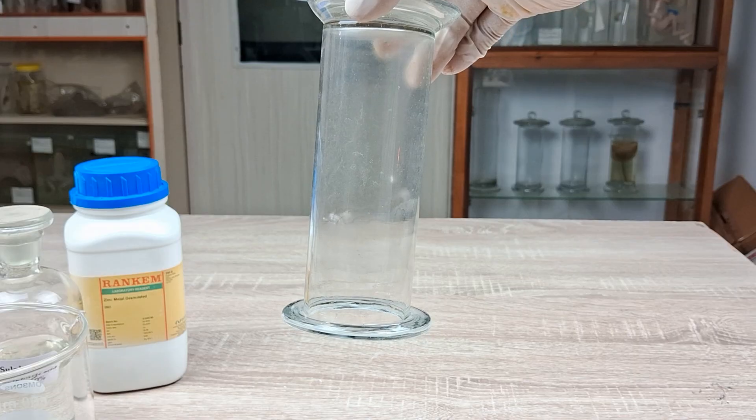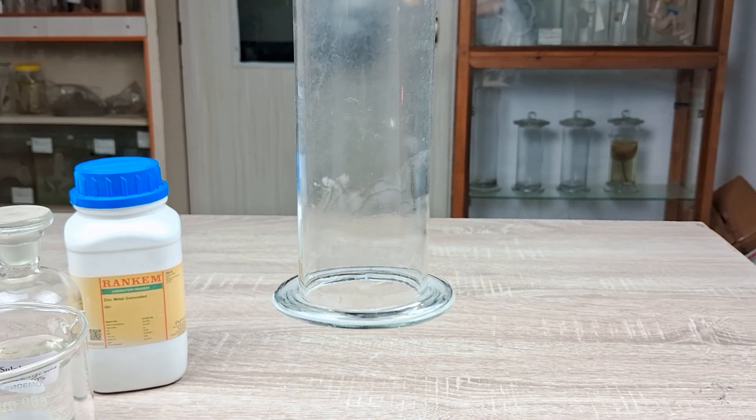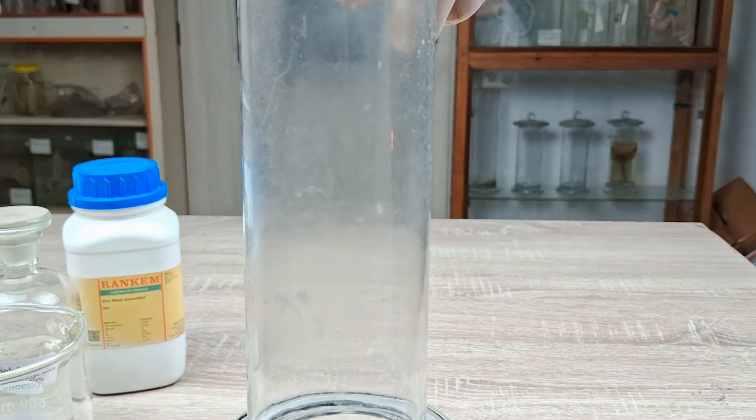Once the gas inside the jar had completely burned, you can see a hazy layer of condensation forming on the inner walls of the jar.